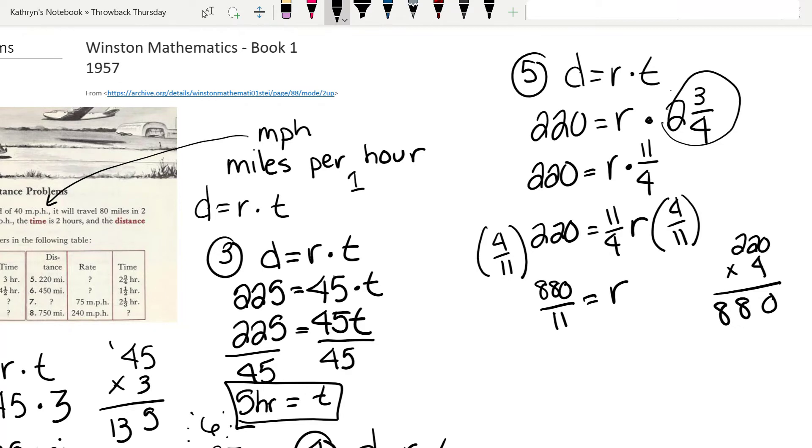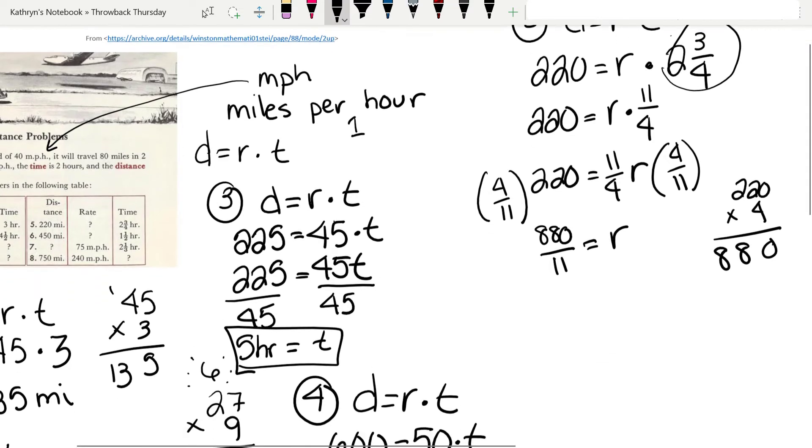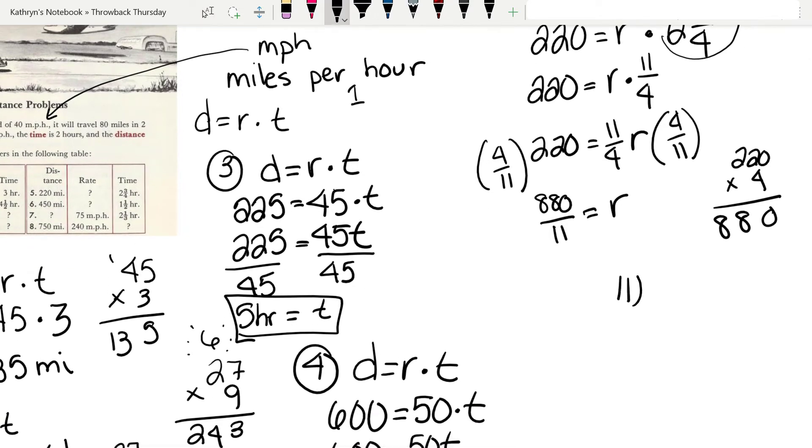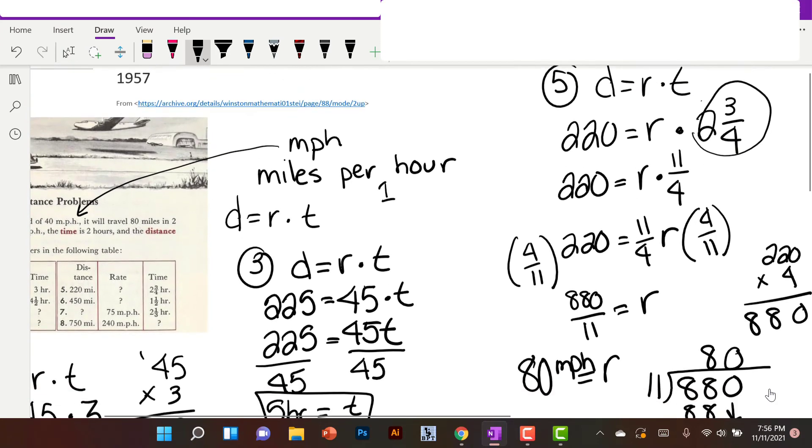Now, we're talking about a rate. If someone asks you how fast were you driving, would you say 880 over 11 miles per hour? Probably not. So let's divide. 11 into 880. That's going to go 8 times. 88, 0. Bring down the 0. 11 goes into 0, 0 times. Now that makes more sense. Our rate is 80 miles per hour. That's pretty fast. And what is this, 1957?